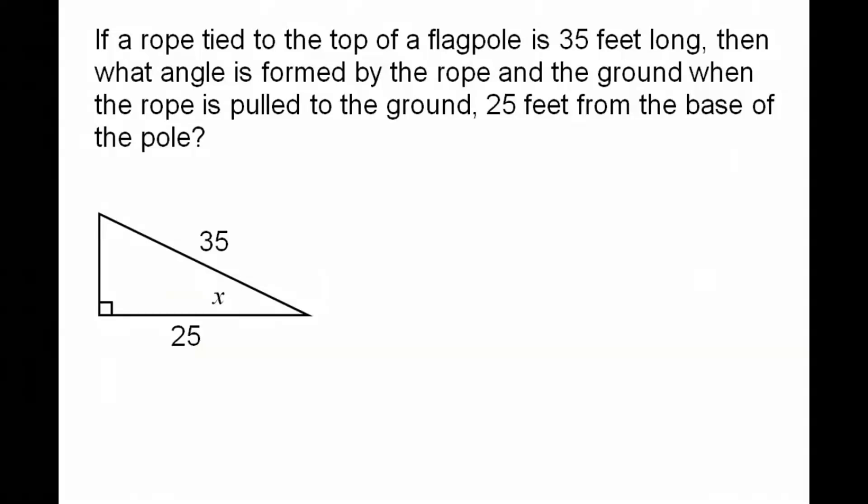If a rope tied to the top of a flagpole is 35 feet long, then what angle is formed by the rope and the ground when the rope is pulled to the ground 25 feet from the base of the pole? Sometimes the hardest thing about these is getting the picture right. You've got your flagpole right here. Here's my flag, here's my pole, and I'm tying a rope on it to a point on the ground 25 feet from the base of the pole. I'm trying to find this angle.